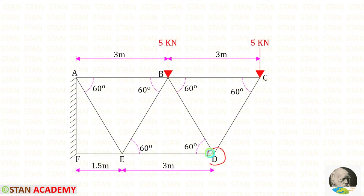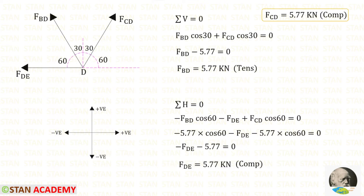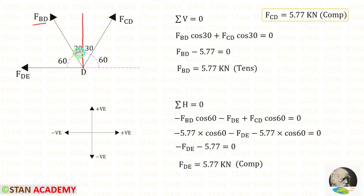Now we have to select joint D because in this joint there are only two unknown forces: the member forces in DE, DC, and DB. This angle is 60 degrees, so we can calculate the complementary angle as 90 minus 60, giving us 30 degrees. So this angle is also 30 and this angle will be 60. At joint D, first we apply the rule Sigma V = 0, because when we apply this rule there will be only one unknown, that is FBD. FBD is inclined; to make it vertical we need 30 degrees, so we multiply FBD with cos 30. When we make it vertical it will be acting upwards, so it should be applied as positive.